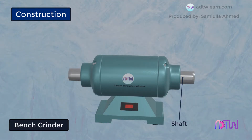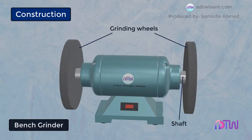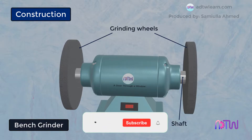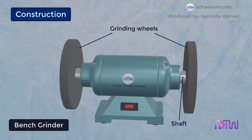The shaft of the motor extends out on both sides, and on both ends grinding wheels are mounted. These grinding wheels do the actual work of material removal. They come in different types, and the maximum RPM at which they can be operated is printed on the cover — this RPM should never be exceeded, as over-speeding can explode the wheel and cause serious injuries or death.